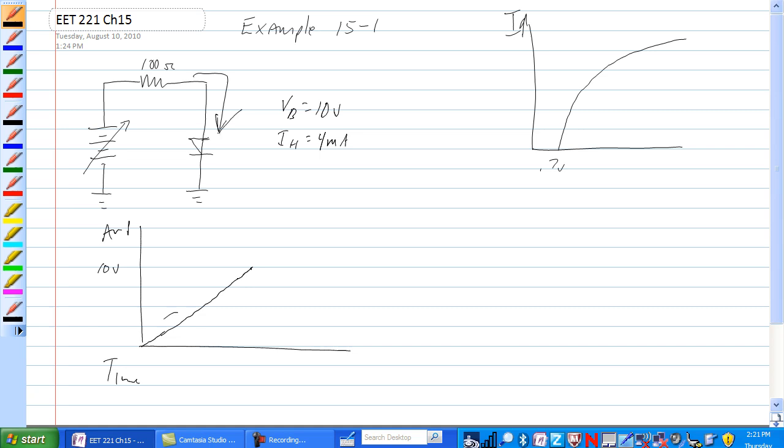Up until this point, from zero here to 9.999 volts, there is no current through this circuit here.